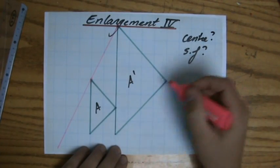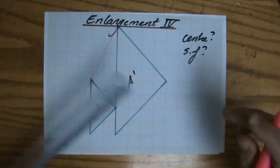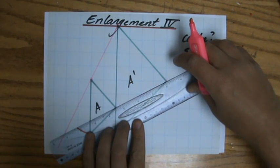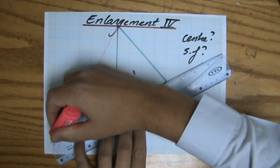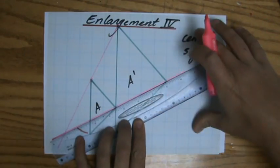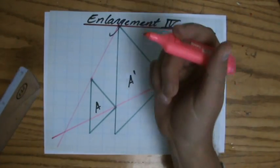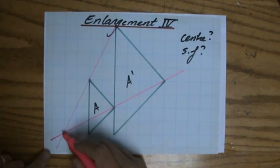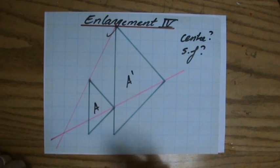Now, where is it going to be? I have no idea. So I'm going to do that for another pair of points that correspond. And there we go. Beautiful, long, accurate line. Now you're going to use a sharp pencil, not a thick one. And there is my center of enlargement.